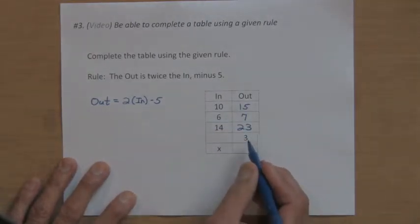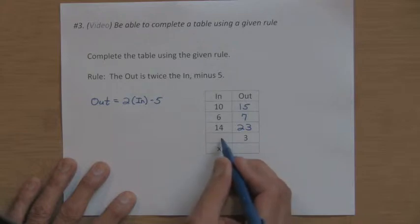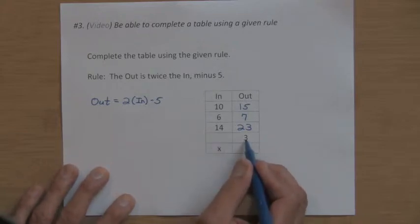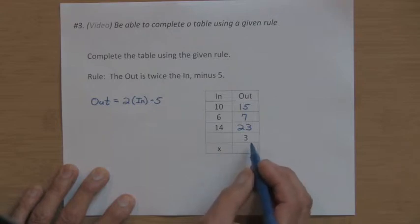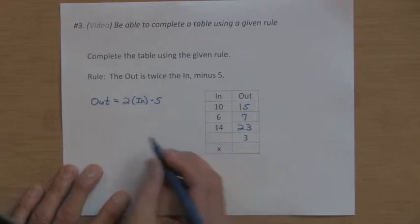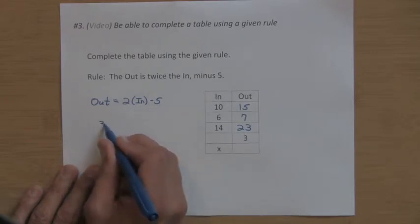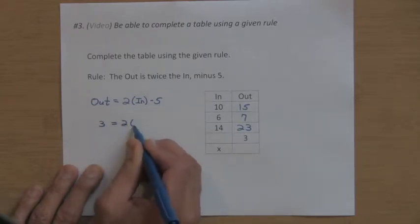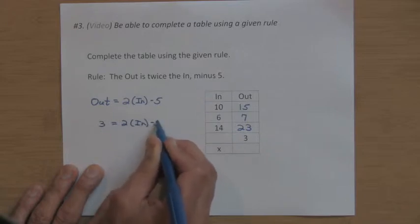Here's a little bit tricky problem. The in is not given, but the out is three. So I've got to think, what can I take two times and take away five and make three? If you think of it this way, I want my out to be three, and I want to take two times the in and then subtract five.